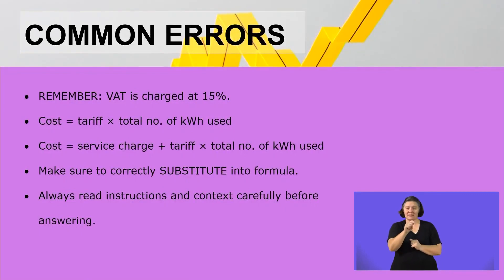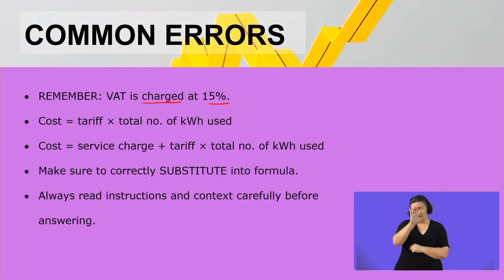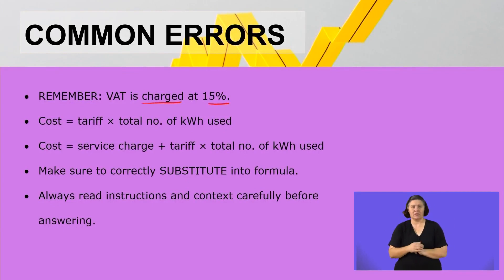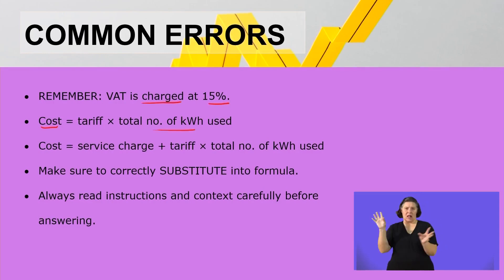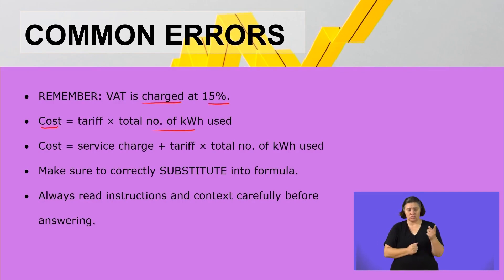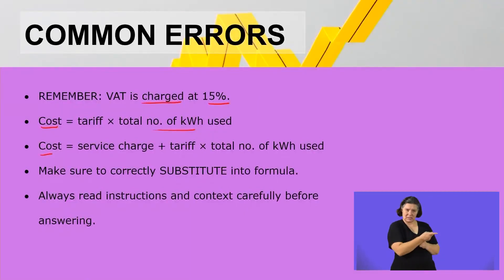Remember that VAT is charged at 15% in our country — that is 15%, no longer 14%. Also, to calculate the cost, we take the tariff multiplied by the total number of kilowatt hours used. So that is for electricity prepaid: you take the tariff and multiply by the number of kilowatt hours used.